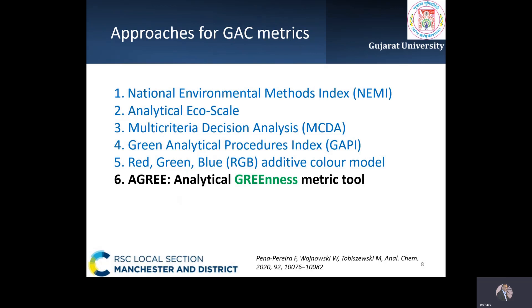In the RGB additive color model, three primary colors represent different attributes: red signifies analytical performance, green relates to safety and eco-friendliness, and blue refers to productivity. The final color of the method is the additive synthesis of the primary colors. My focus, however, will be on the sixth metric — the AGRI greenness metric tool — as it evaluates all 12 principles of green analytical chemistry, which is not the case with other approaches.